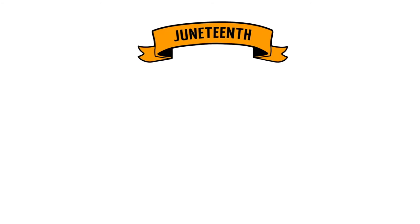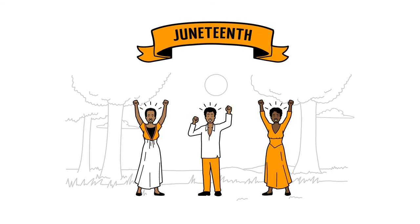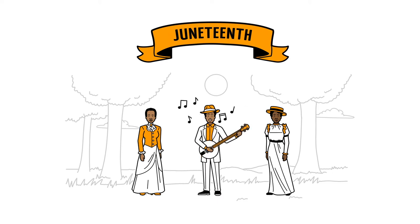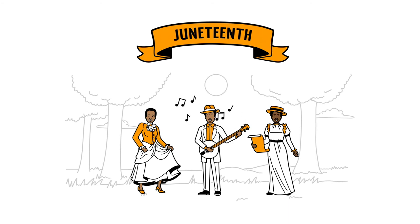The following year on June 19th, the first official Juneteenth celebrations took place in Texas. The newly freed African Americans celebrated by dressing up nicely, something they were not allowed to do as slaves, and singing spirituals, dancing, and reading the Emancipation Proclamation aloud.